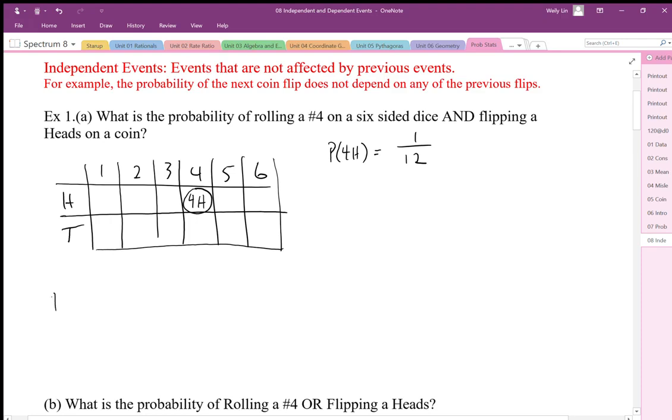So it looks like this: the probability of heads and number four can look like this - the probability of heads times the probability of rolling a number four.